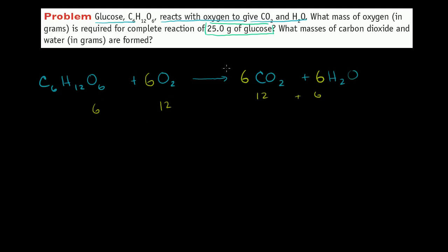Now everything works out: I have 6 carbons on both sides, 12 hydrogens on both sides, and 18 oxygens on both sides — 12 from the O2 and 6 from the glucose on the left, and 12 from CO2 and 6 from water on the right.